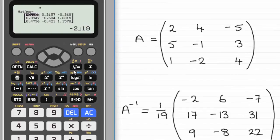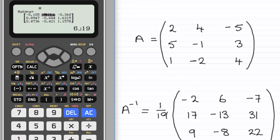The calculator gives us the result either as a decimal or as an exact fraction. For that first element, it's minus 2 nineteenths, which is what we get if we multiply minus 2 by 1 nineteenth. Moving the cursor across gives the next element — it's exactly 6 nineteenths, and so on.